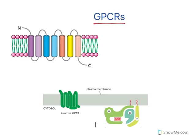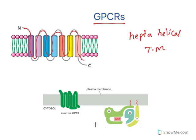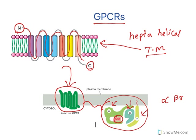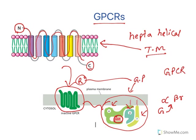G-protein coupled receptors are known as heptahelical transmembrane receptors. There are seven helices — this is what heptahelical means. Transmembrane means it spans the entire membrane. The N-terminal is outside the cell and the C-terminal is inside the cell. This receptor is coupled with three different proteins: alpha, beta, and gamma. The alpha protein is bound with GDP — guanosine diphosphate. Because it is bound with GDP, they are known as G proteins. So G proteins are coupled with receptors, hence they are known as G-protein coupled receptors.